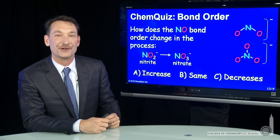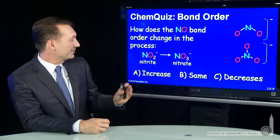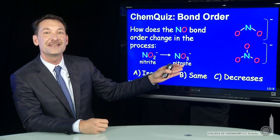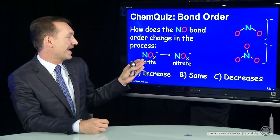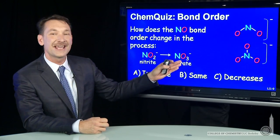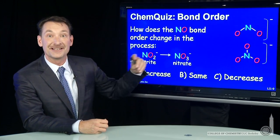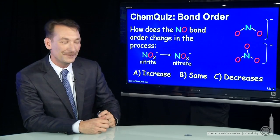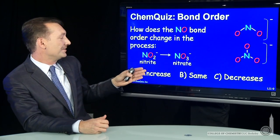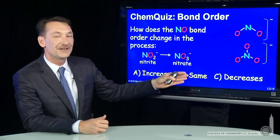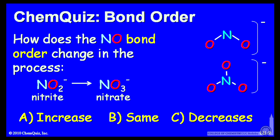Let's see if you can predict some bond orders. Here we'll take nitrite going to nitrate, NO2 minus to NO3 minus. In that conversion, it's an oxidation. Does the bond order increase, decrease, or stay the same? Consider that for a minute and make a selection.